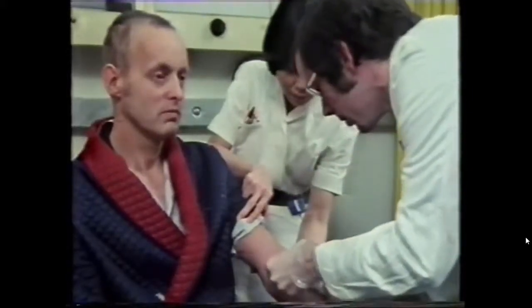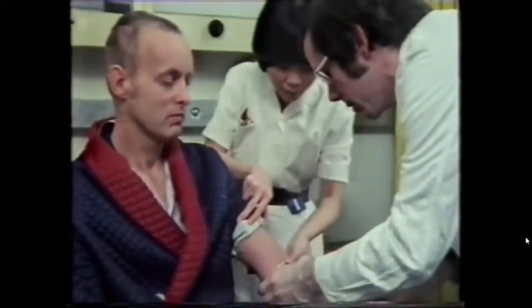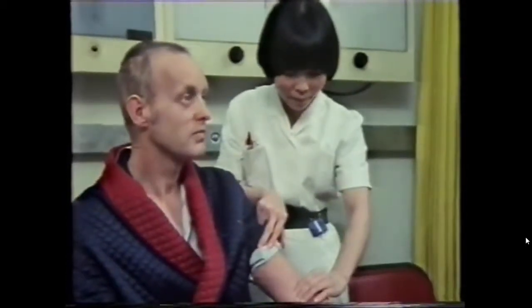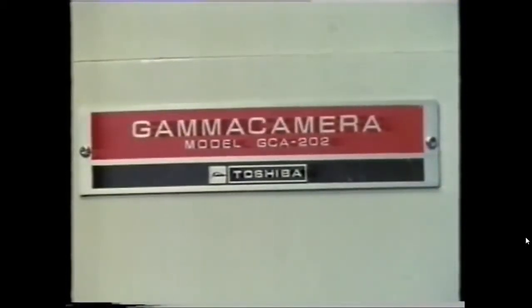To find out if this man's liver is working normally, he's injected with a radioactive solution. The gamma rays pass through his flesh and are then detected by a special camera that shows which parts of his liver are working.